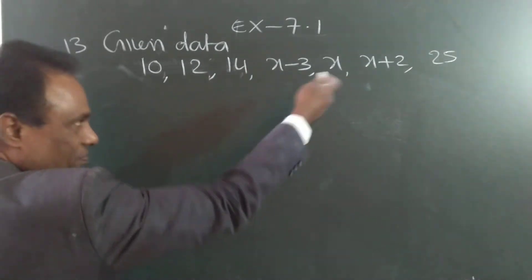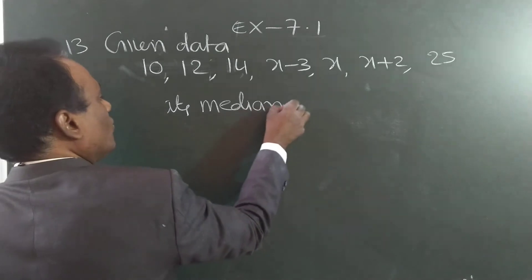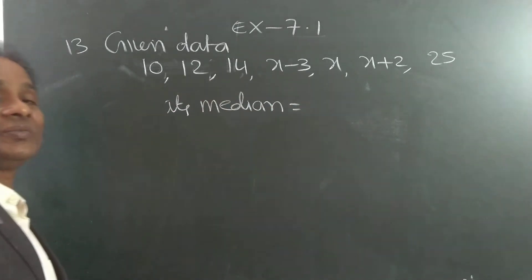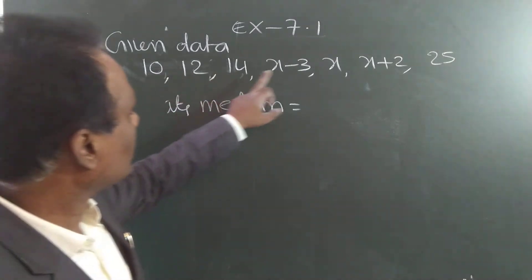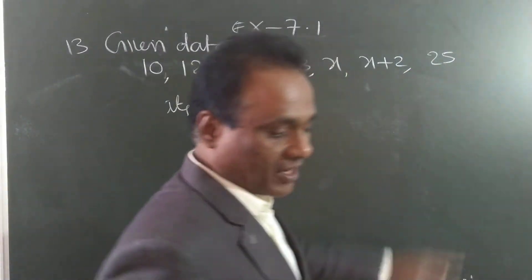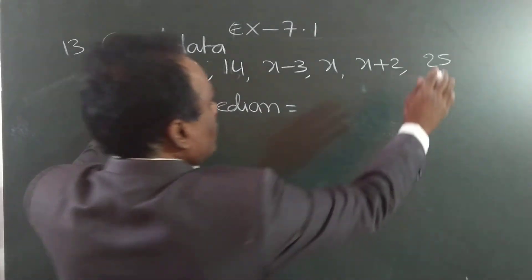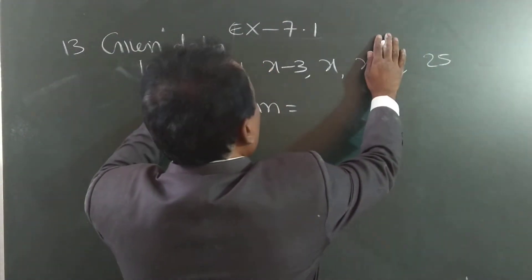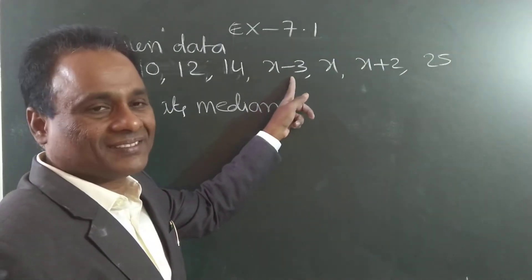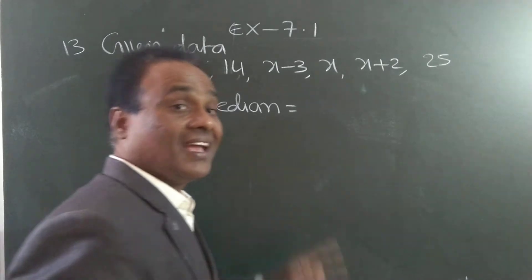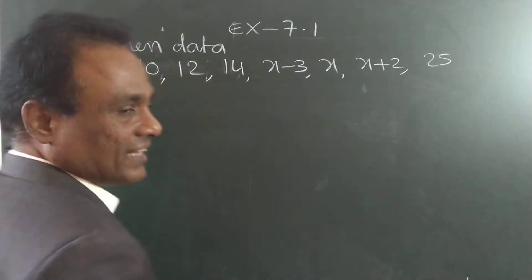What is its median? There are 1, 2, 3, 4, 5, 6, 7 terms — seven terms. Median is the middle one. Remove 1 from each end, remove 2 from each end, and the remaining middle one is the median. Directly we can tell. Otherwise, use the rule.